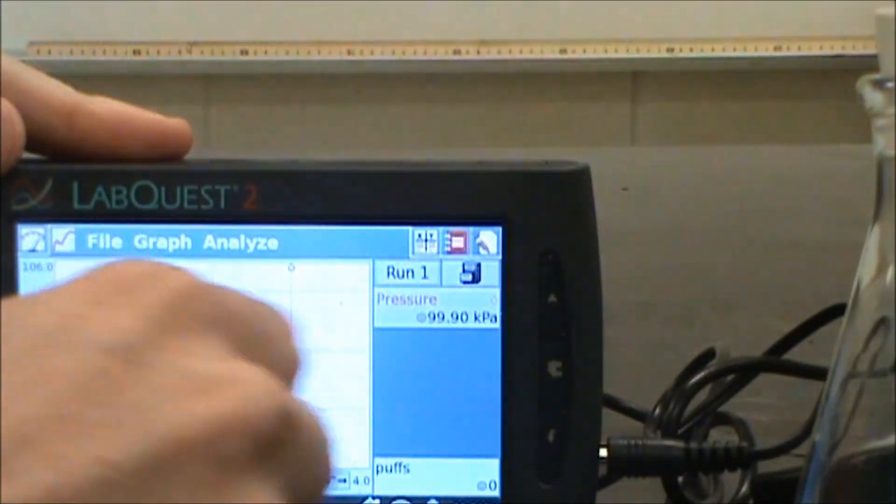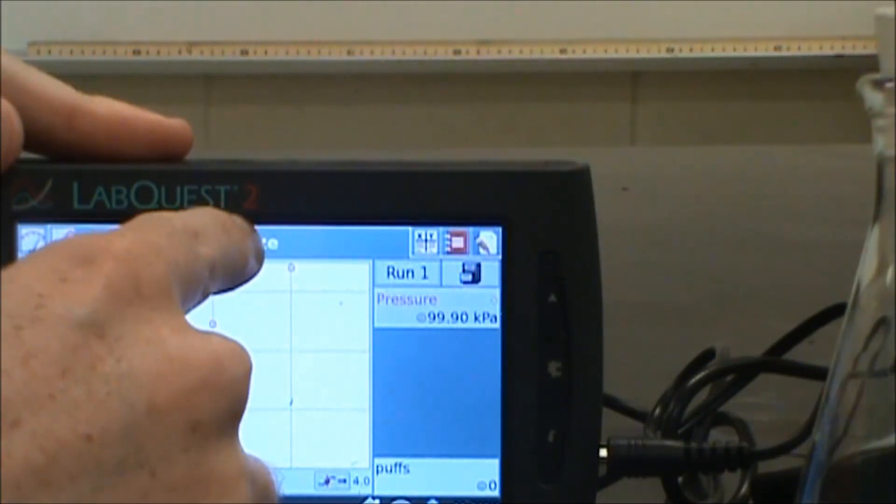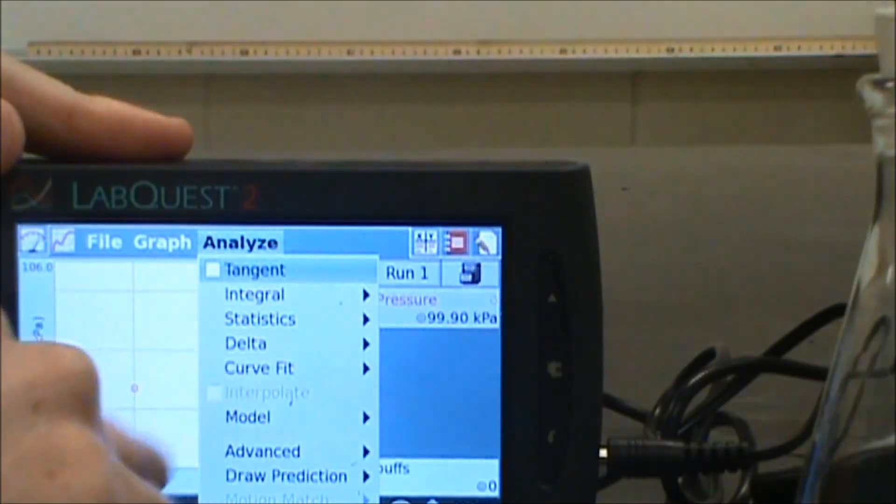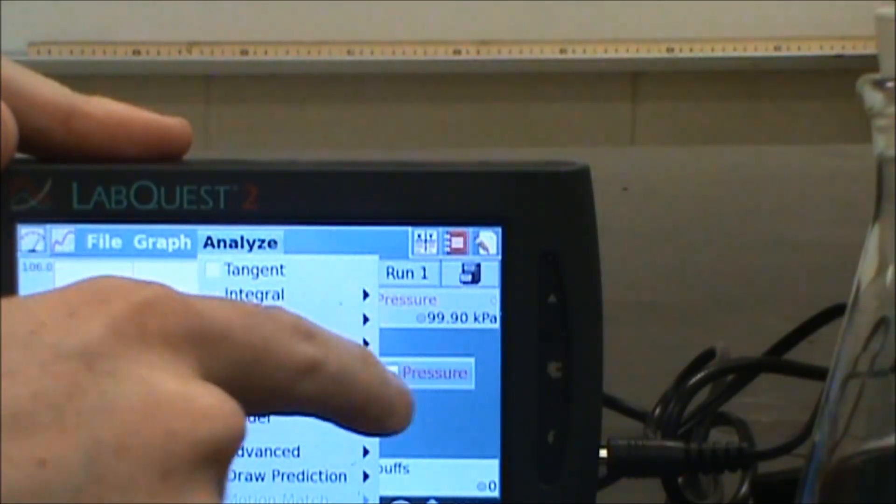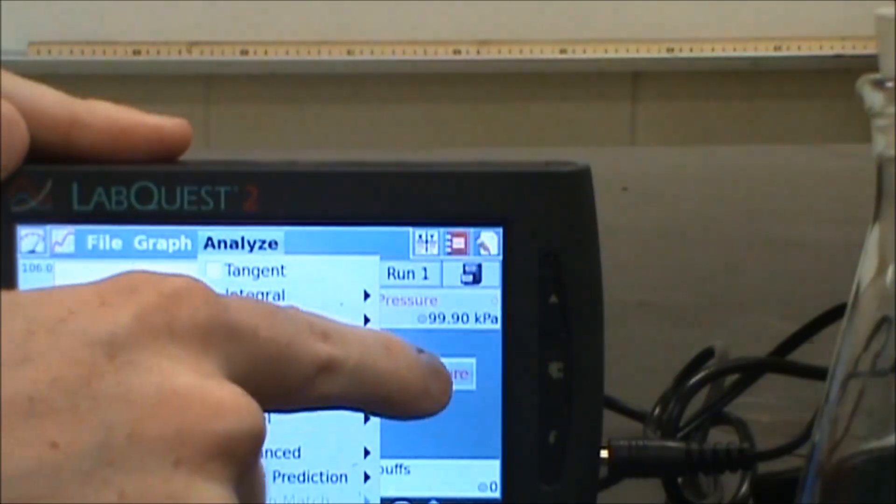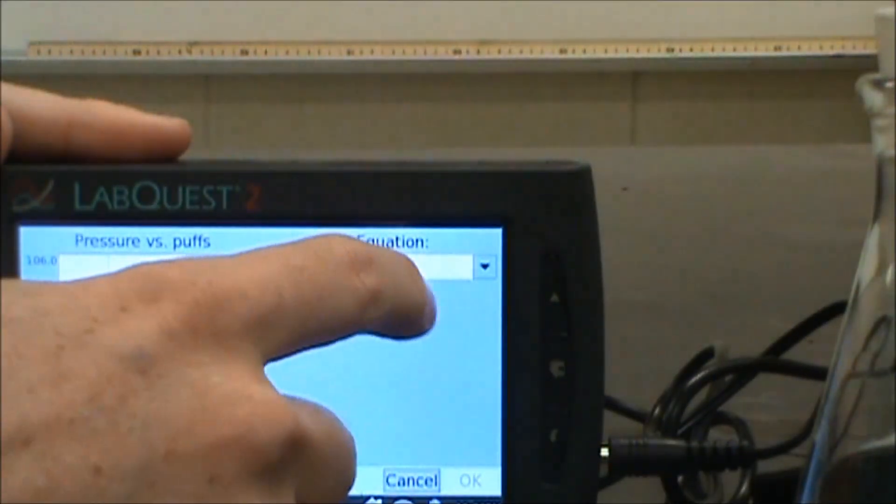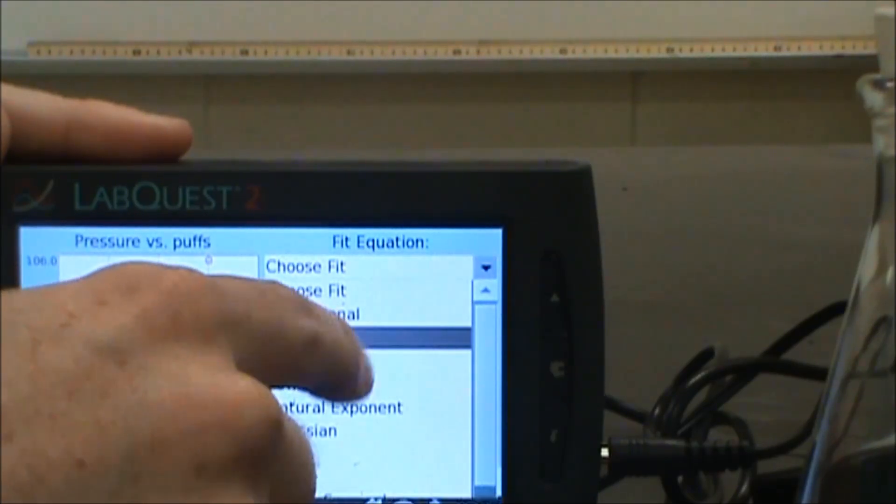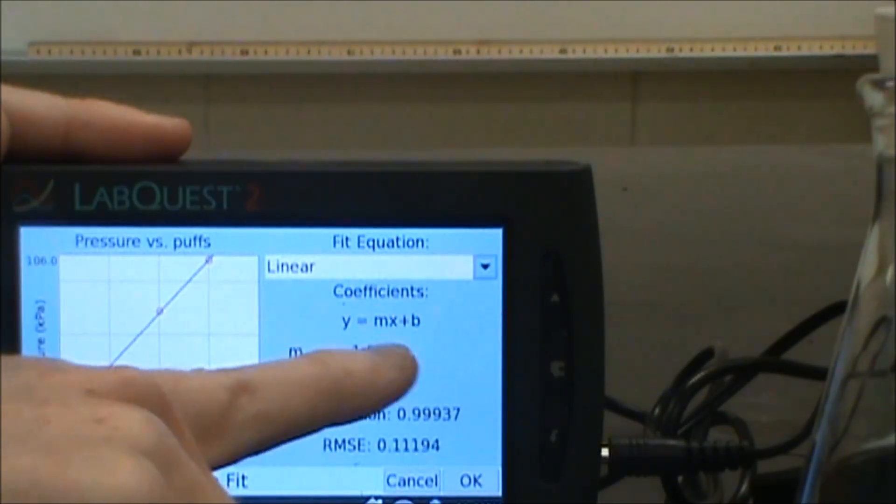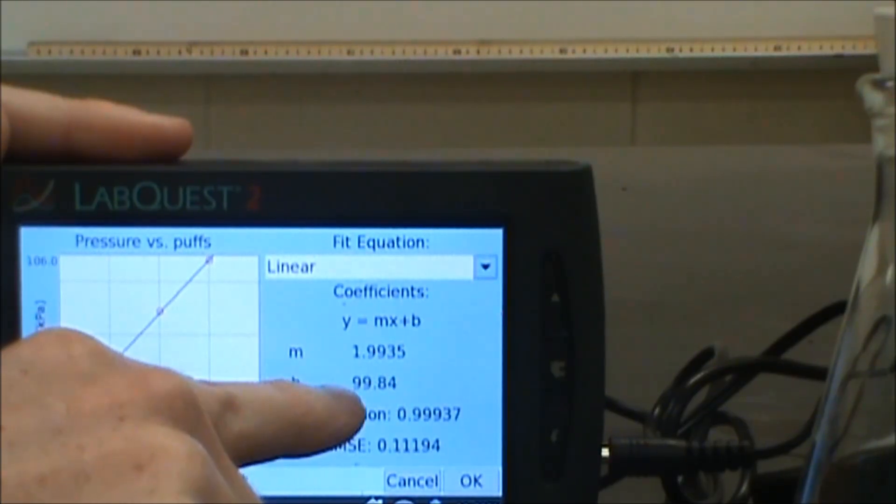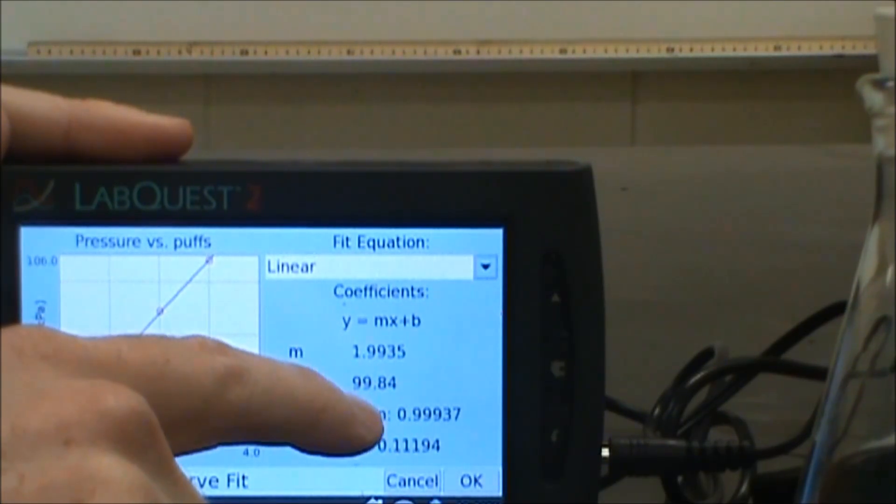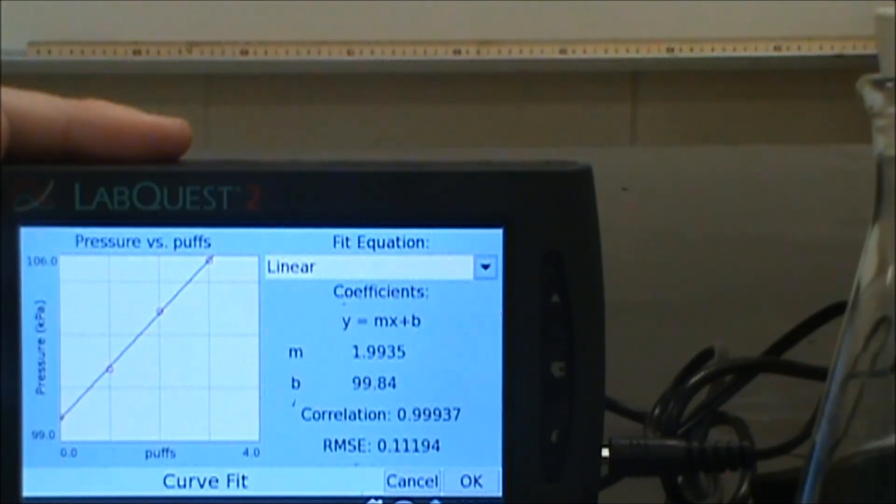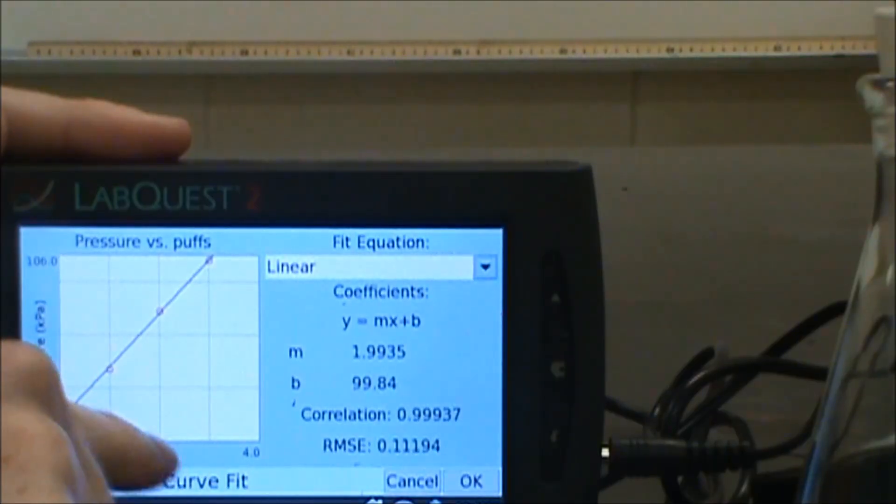I'm going to stop there. You can continue on, although eventually this may pop out from having so much pressure. I can go to analyze. Where it says curve fit, I can select my pressure. Then I can choose a line of best fit. For this one, I'm going to choose linear. It gives me a y equals mx plus b. My slope is 1.9935. My intercept, 99.84. That gives me my line of best fit for puffs of air versus pressure.